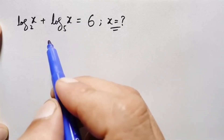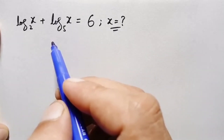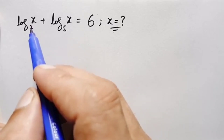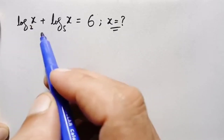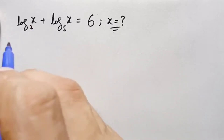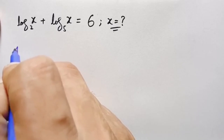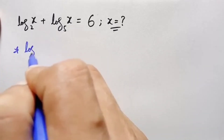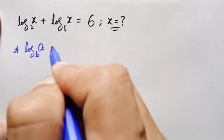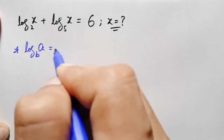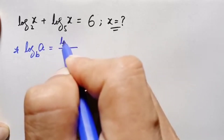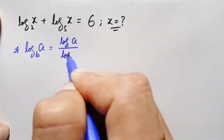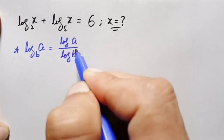How can we solve this log problem with different bases? First, on the left hand side we will use the change of base logarithm identity. Using this logarithm property, we can write log of a with base b as log of a divided by log of b.